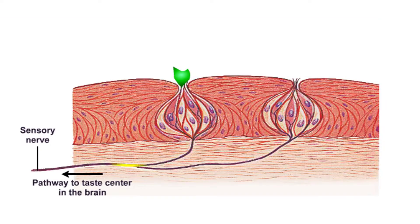Either way, the change in ion distribution across the membrane causes depolarization and initiates an action potential that is transmitted to the sensory nerve. So a chemical signal is transferred into an electrical impulse that travels along the sensory nerve sending information to the brain — hence we taste.